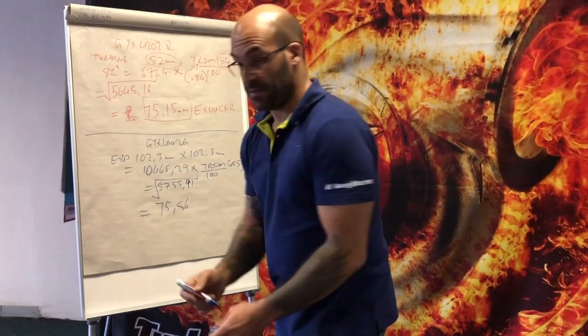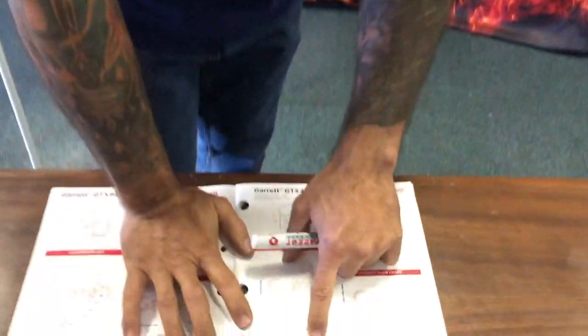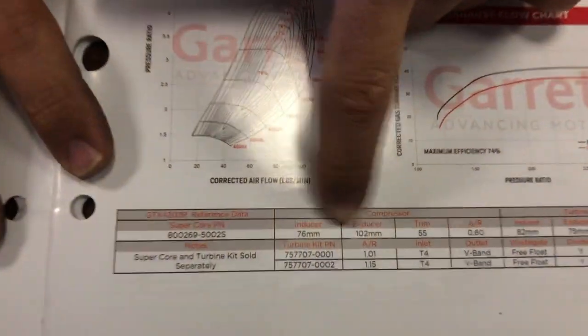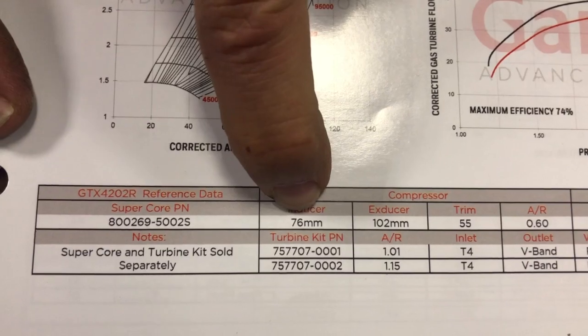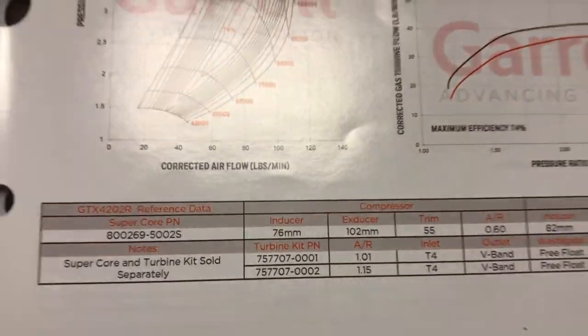Let's verify that in the other book: 102mm exducer, 76mm inducer - they've rounded it up to 76mm. That matches our calculation perfectly.